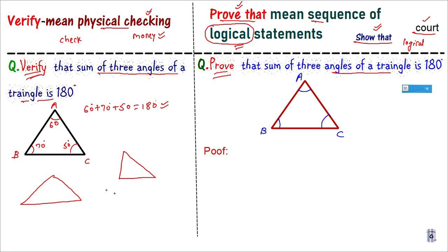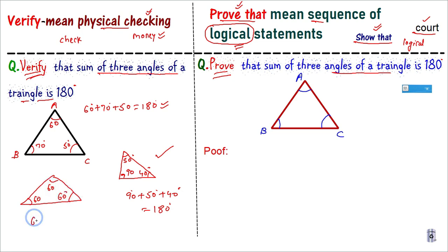For verification, we don't use just one triangle — we take 3 or 4 figures. In a second triangle with angles 90°, 50°, and 40°: 90 + 50 + 40 = 180°. In a third — an equilateral triangle — all angles are 60°: 60 + 60 + 60 = 180°. All diagrams give a sum of 180°. This is verification — checking done.